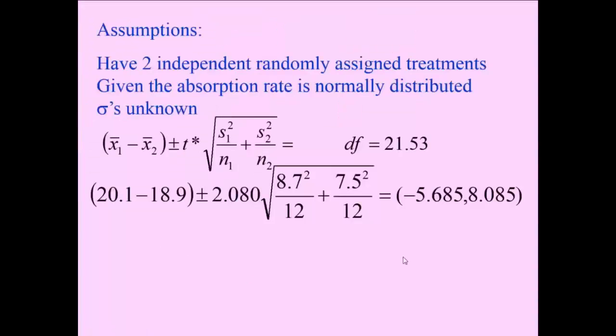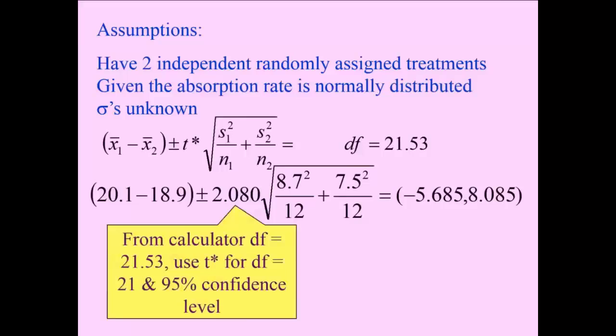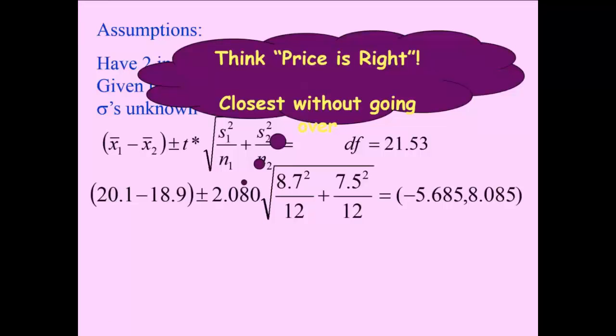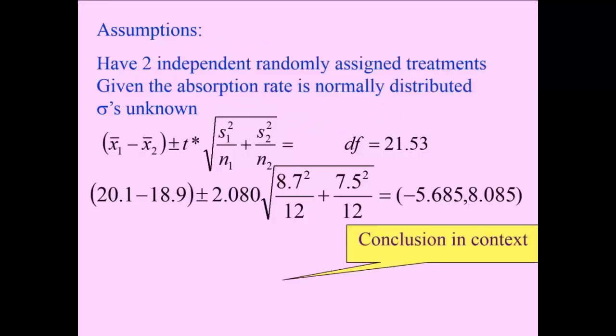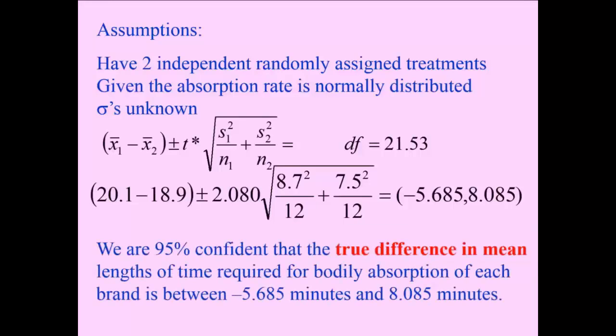Okay, so right back to where we left off. Here's how we wrote down the formula based on what the calculator gave us, and we actually kind of worked backwards to figure out some of these numbers. So now that we've got our confidence interval being from negative 5.68 to 8.085, now we have to make a sentence about what that represents. So that's that memorized sentence that we've talked about in class. We are 95% confident that the true difference in mean lengths of time required for bodily absorption of each brand is between negative 5.6 minutes and 8.085 minutes.